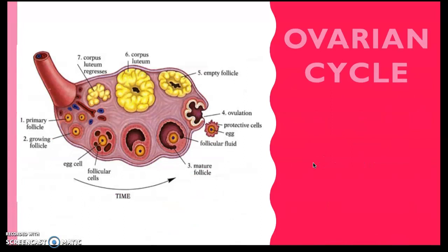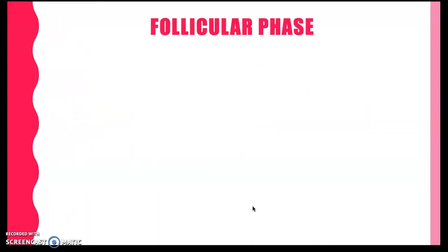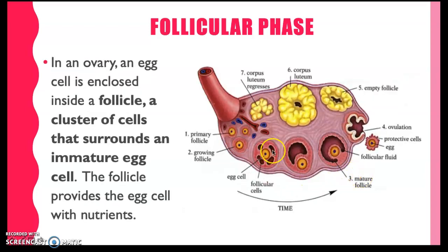When we say the ovarian cycle, you would see this photo almost always, and this involves the ovary and prepares the egg for maturation. There are two different phases of the ovarian cycle, and the first phase is called the follicular phase, from the word follicle — so it has something to do with the follicle.